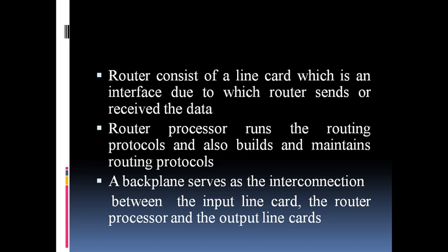A router consists of a line card, router processor, and a backplane. Line card is an interface by which router sends and receives data.